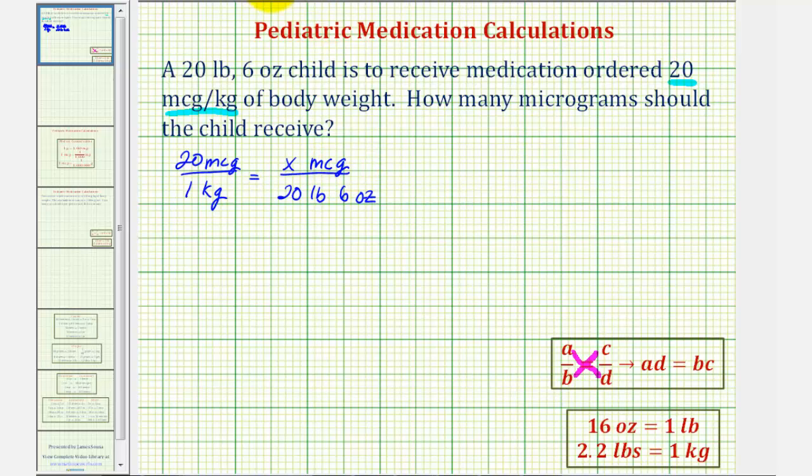Notice in this form, we cannot cross multiply because our denominator contains different units. Here we have kilograms, and here we have both pounds and ounces. So we'll first convert these two to a common unit. We'll convert the six ounces to pounds, and then we'll have to convert the pounds to kilograms.